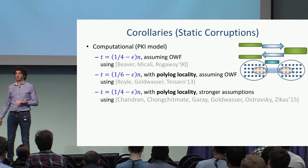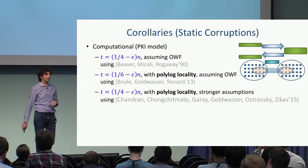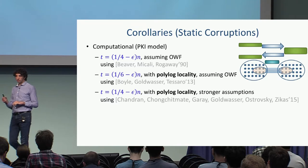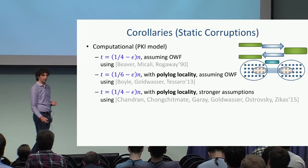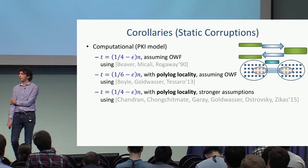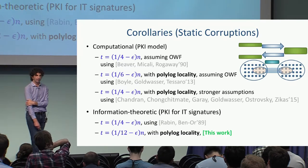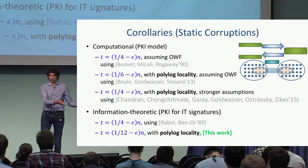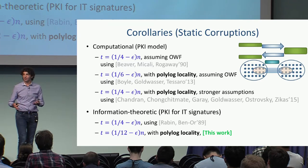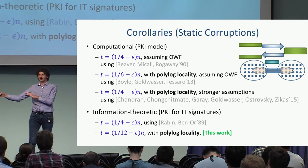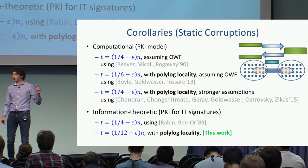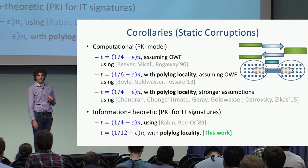Since we only use PKI for setup, we can use information-theoretic PKI and get information-theoretic protocols. We didn't previously have an information-theoretic protocol with polylogarithmic locality, so as a side contribution, we developed an information-theoretic analog of the BGT protocol that gives us this corollary.